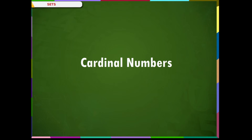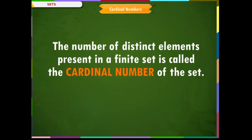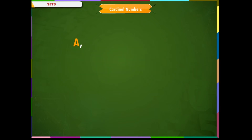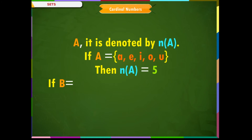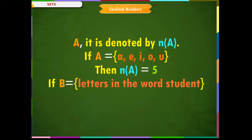Cardinal number of a set. The number of distinct elements present in a finite set is called the cardinal number of the set. In a set A, it is denoted by n(A). If A = {A, E, I, O, U} within curly brackets, then n(A) = 5. If B = {the letters in the word 'student'}, then n(B) = 7.